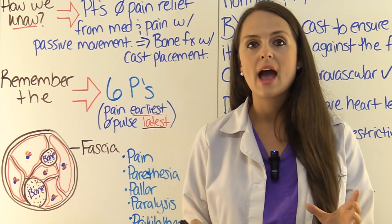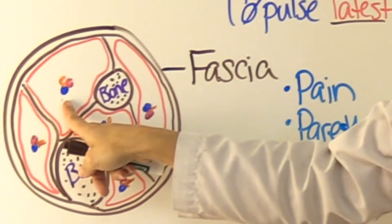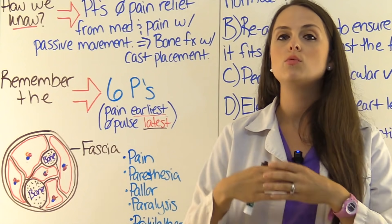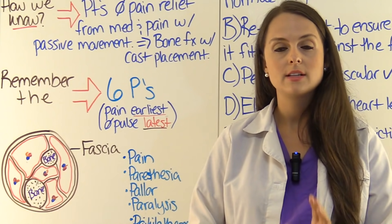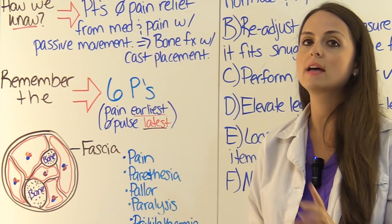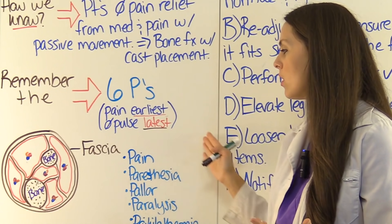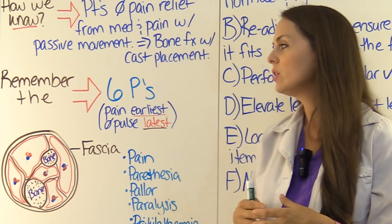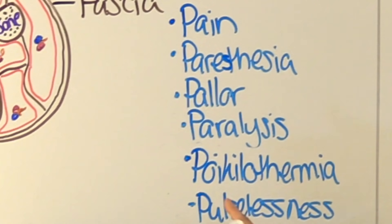That fascia is not going to expand out to alleviate the pressure. Unfortunately, that pressure can become so severe that it can cut off the blood supply and nerve function within that muscle compartment, which will lead to — if not corrected within six hours — irreversible muscle and nerve damage. As a nurse, we want to catch this early. One of the early signs is pain, but we're also looking out for what we call the six P's: pain, paresthesia, pallor, paralysis, poikilothermia, and pulselessness.